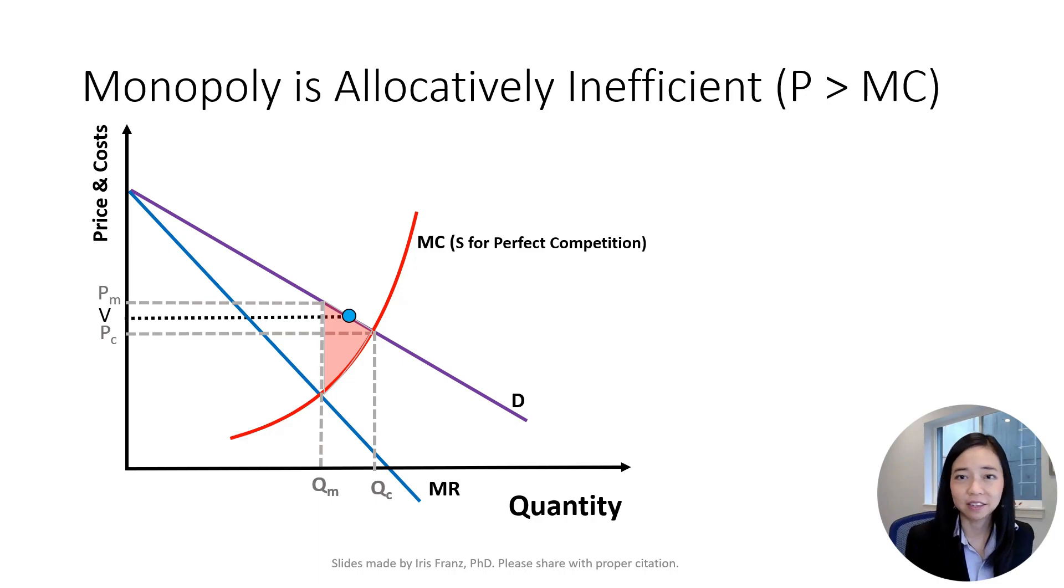That's just too bad that the consumer does not get the product because the marginal cost of producing it is just equal to C, which is lower than the value that the consumer attaches to the product. So this unit should have been produced. Under monopoly, however, this unit will not be produced.